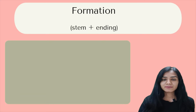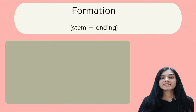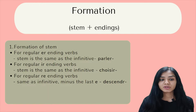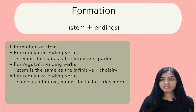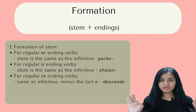Now let's have a look at the formation. The formation is stem plus ending. How do we make the stem? For regular ER-ending verbs, the stem is the same as the infinitive verb — the unconjugated form.